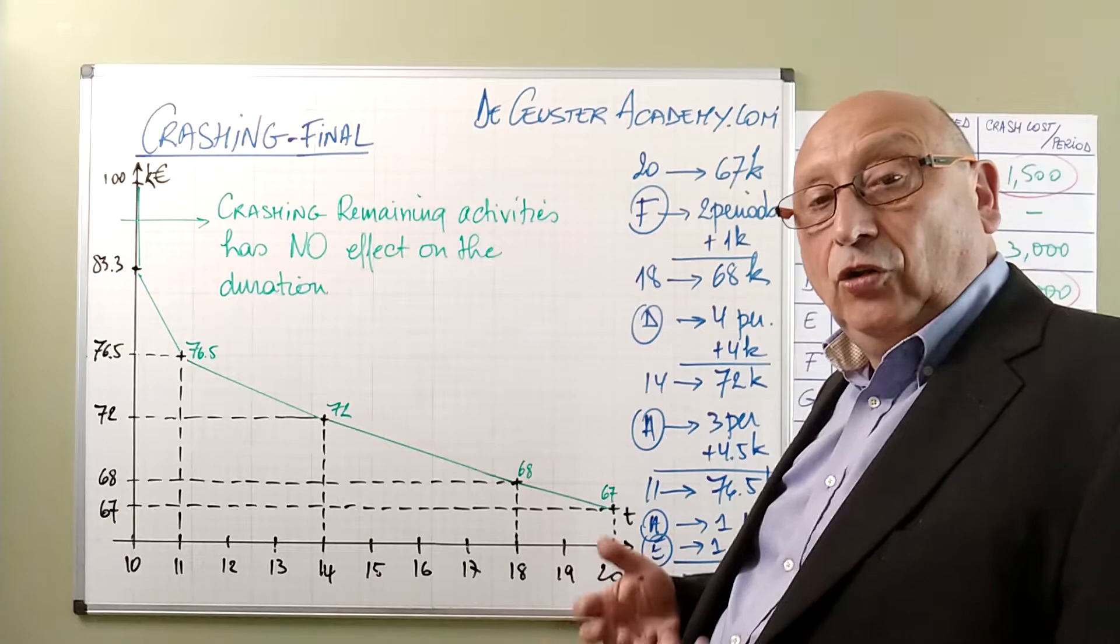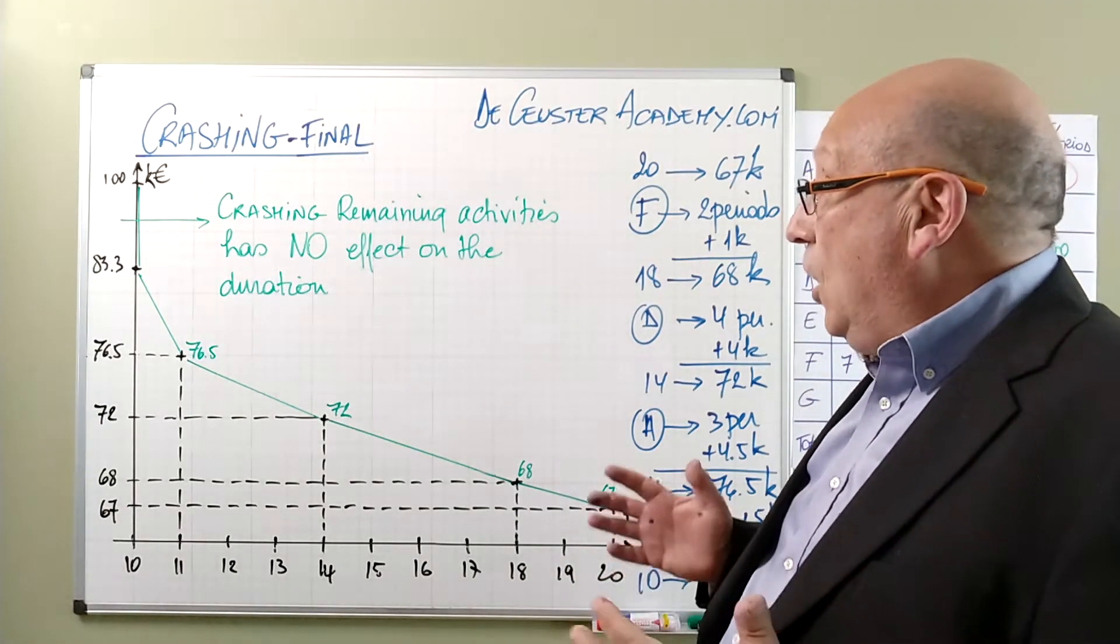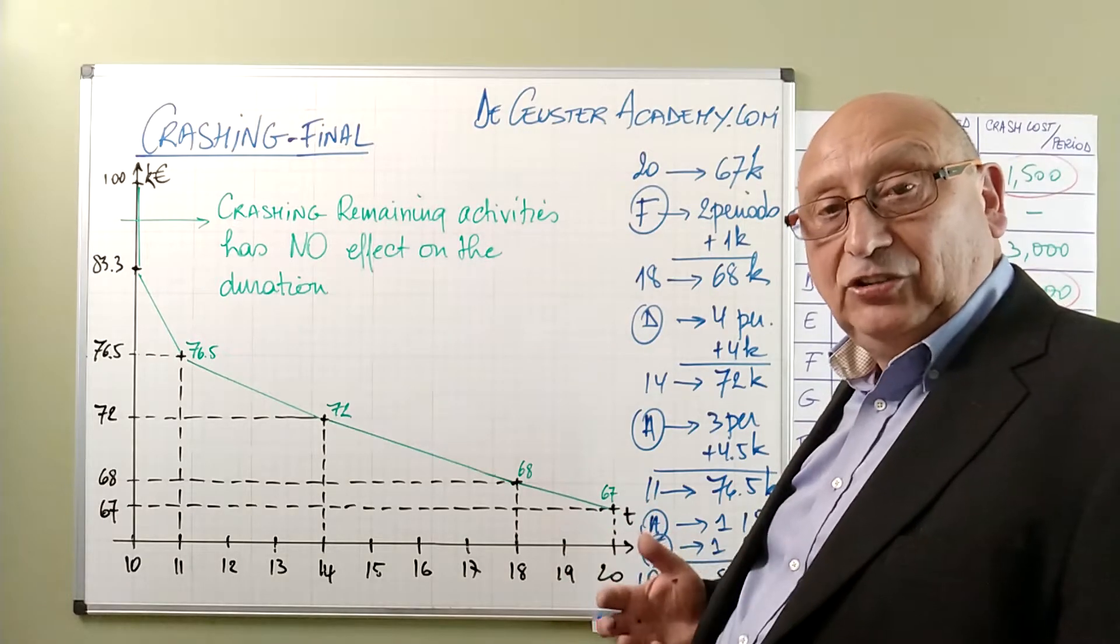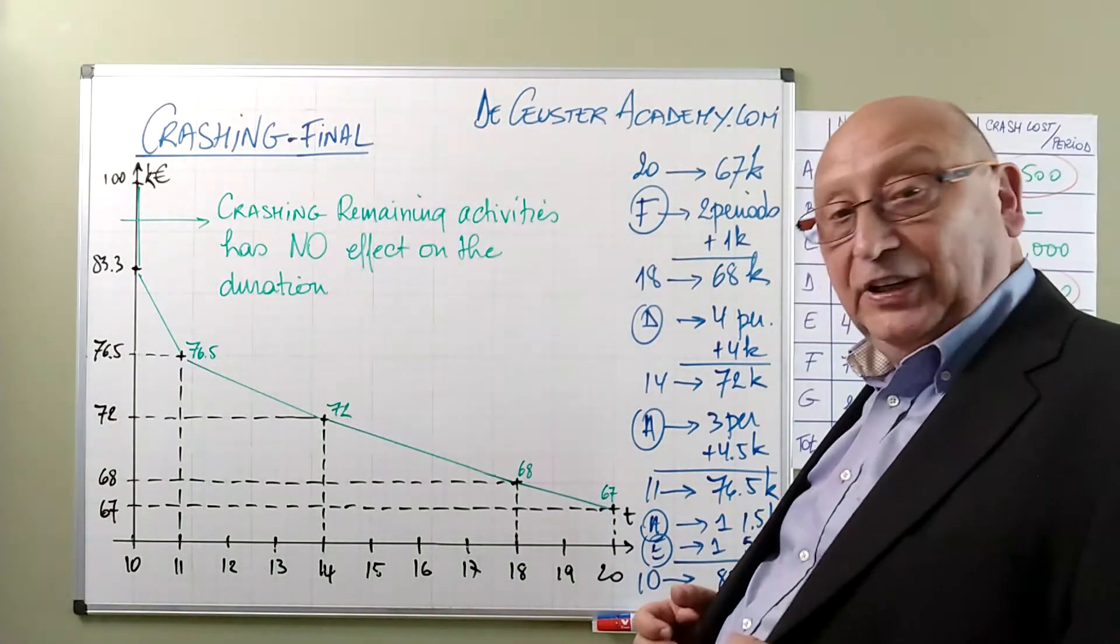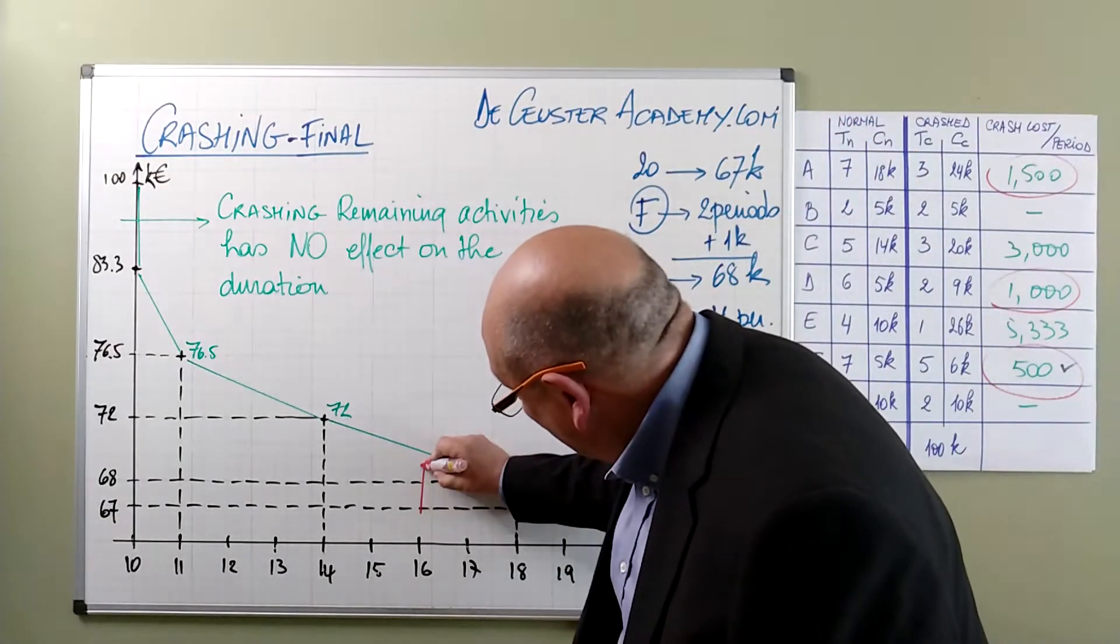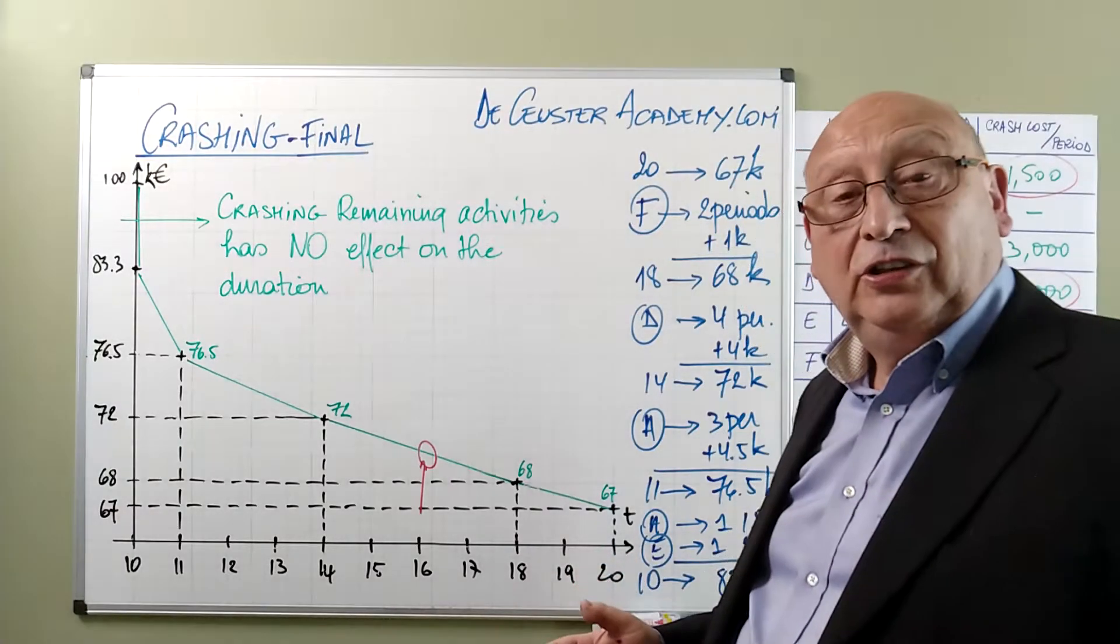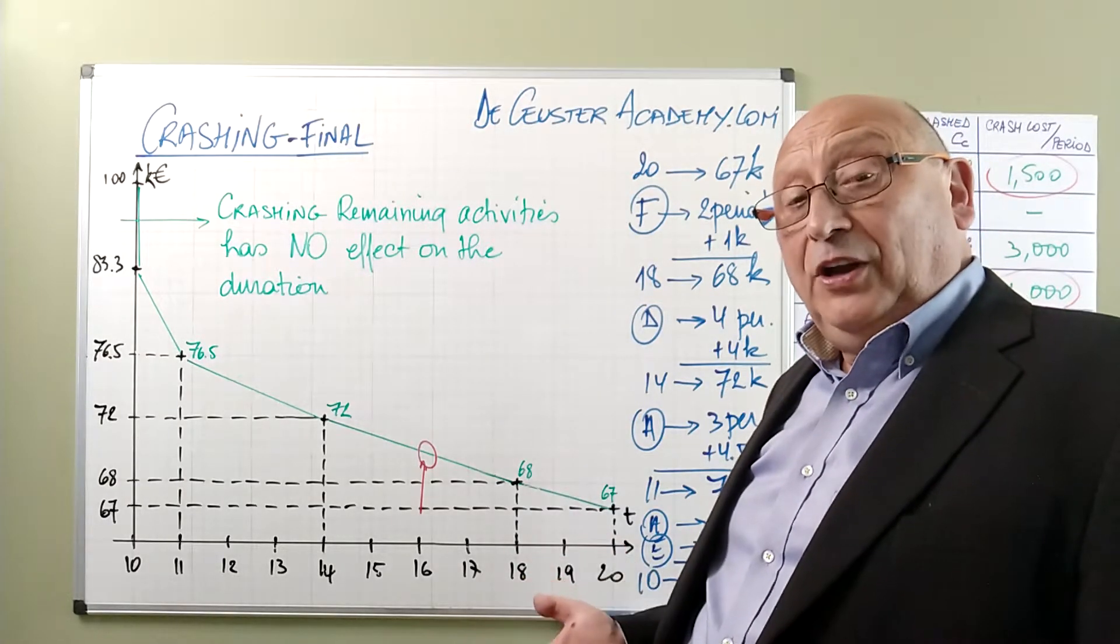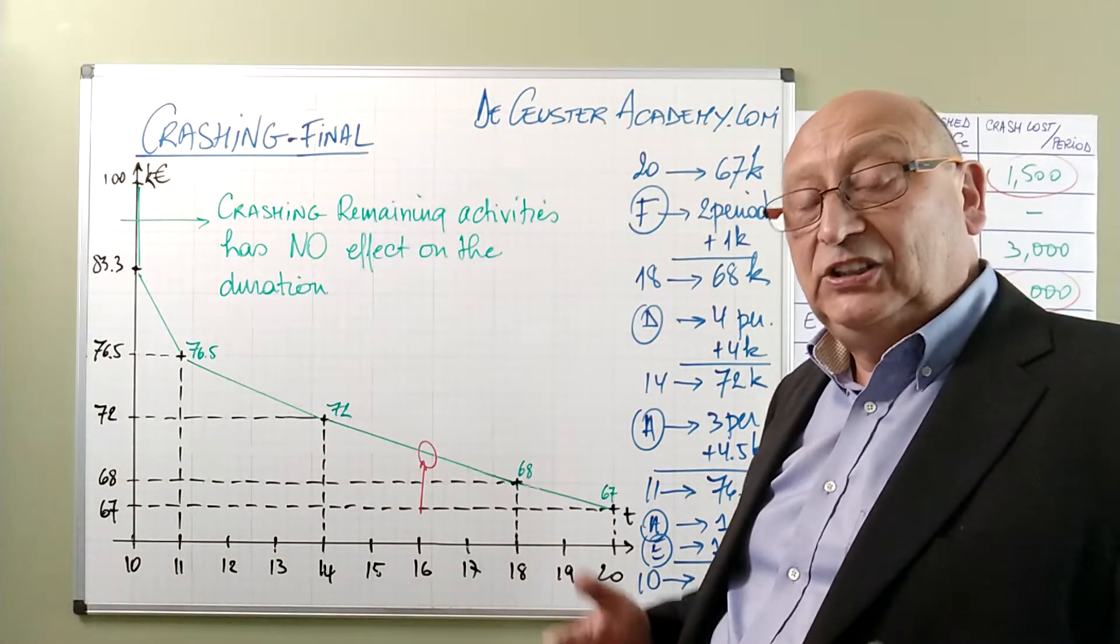Now what can we do with this? When we have a project and we have this relationship, when our customer tells us they want to have this project finished in 16 periods, we can say 16 periods, well this will be the cost of the project. We can add our fixed costs and our profit margin to give an offer to the customer. This is one of the elements for which we can use crashing.